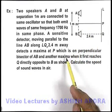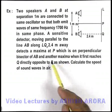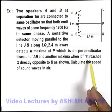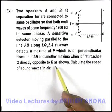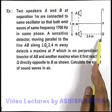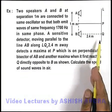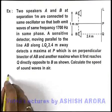In this situation, it will detect another maxima when it reaches a point Q directly opposite to point B as shown. So we are required to find the speed of sound waves in air.